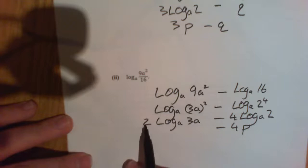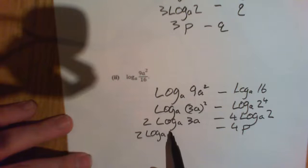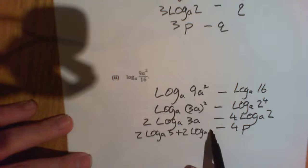Alright. So this one now. This one's very unusual because that's twice both of them. So that's twice the log to the base a of 3 plus twice the log to the base a of a. Right. Well, twice log to the base a of 3, that's twice q plus 2 times log to the base a of a is 1. So plus 2 minus 4p.